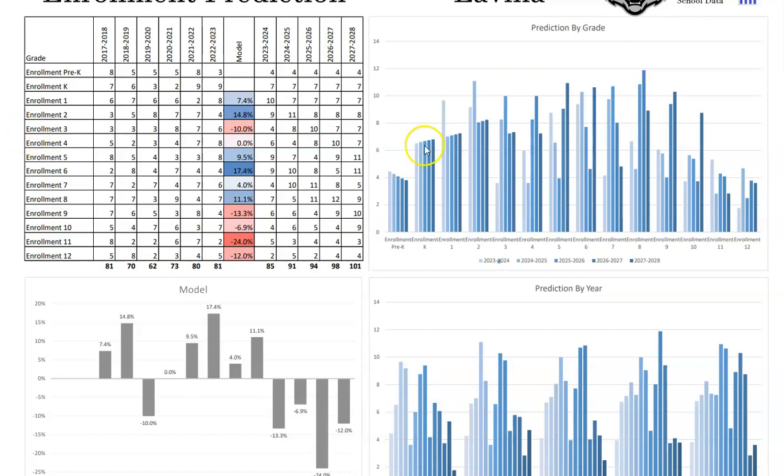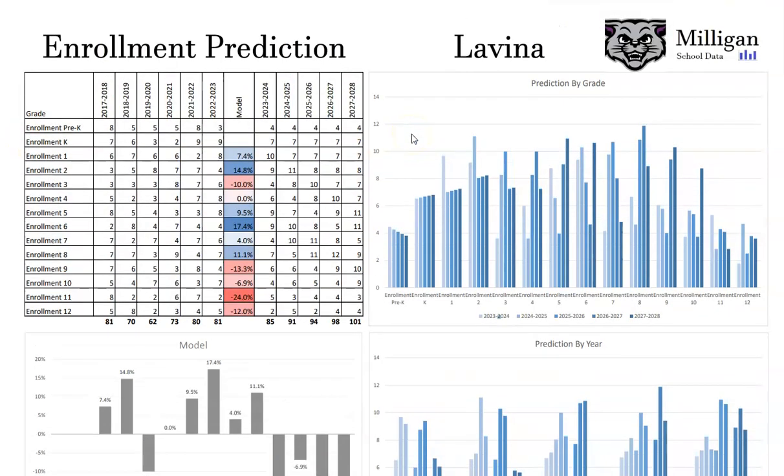Hello, in this video we're going to take a look at the enrollment prediction report. The most basic form of enrollment prediction would be to assume that if you had 10 students in first grade this year, you would have 10 students in second grade next year, and then 10 students in third grade the year after that. While that's a good place to start, I don't think that's going to be a particularly accurate enrollment prediction.